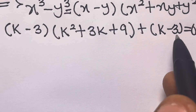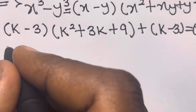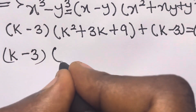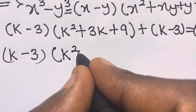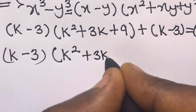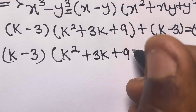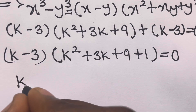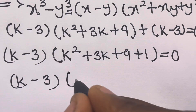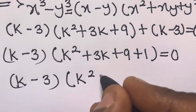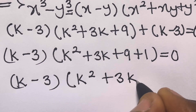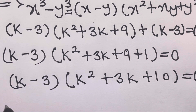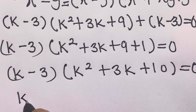We observe that (k minus 3) appears in both terms, so we factorize with (k minus 3) as the common factor. We are left with (k minus 3) times (k squared plus 3k + 9 + 1) equals zero, which gives us (k minus 3)(k squared plus 3k plus 10) equals zero.